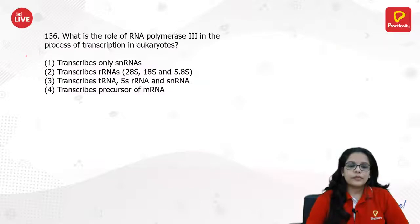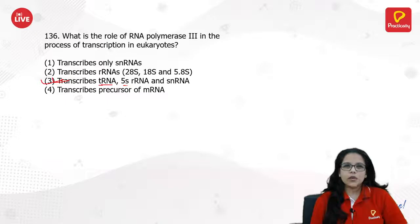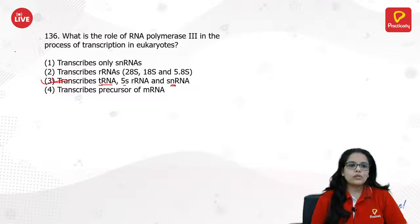What is the role of RNA polymerase III in transcription in eukaryotes? RNA polymerase III transcribes tRNA, 5S rRNA (a small part of the larger ribosomal subunit), and small nuclear RNA.